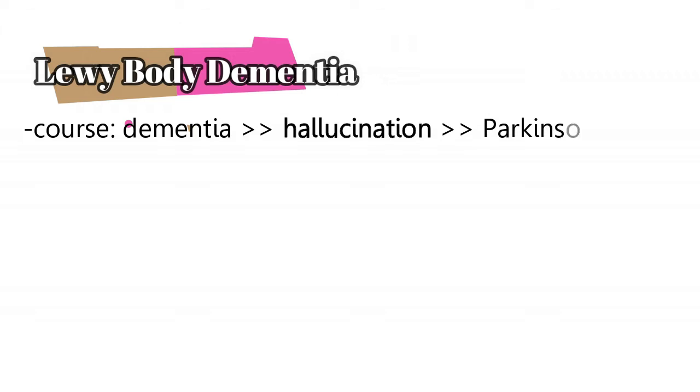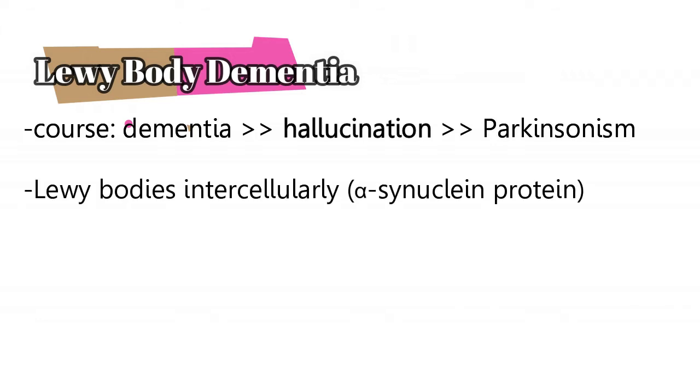We have Lewy body dementia. The course for Lewy body dementia is dementia followed by hallucination followed by parkinsonism. It's actually the only type of dementia that can cause hallucination in this course, so if you see hallucination, think Lewy body dementia. Under the microscope we're going to see Lewy bodies, which are intracellular alpha-synuclein proteins. We also see these proteins in Parkinson's disease.